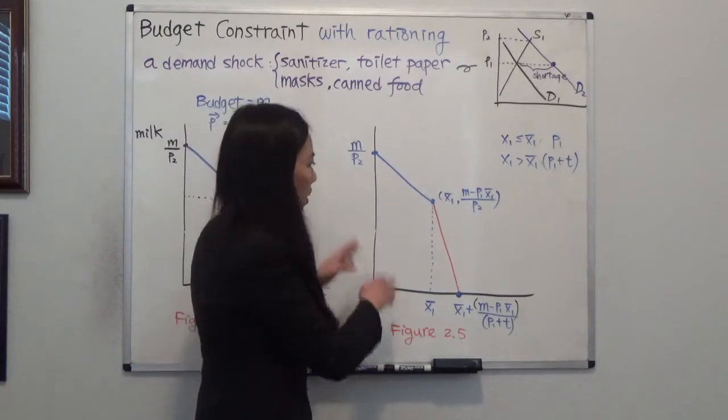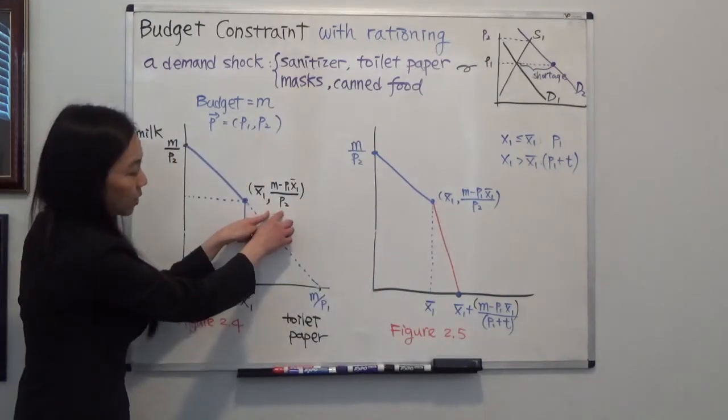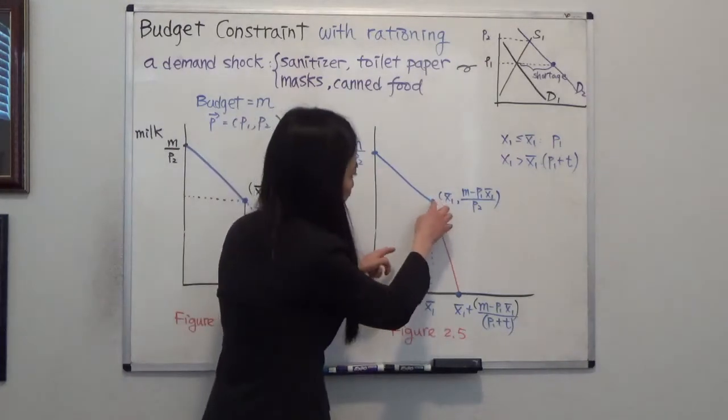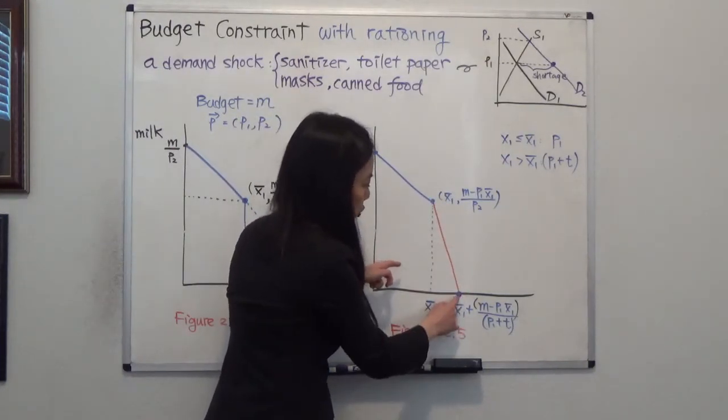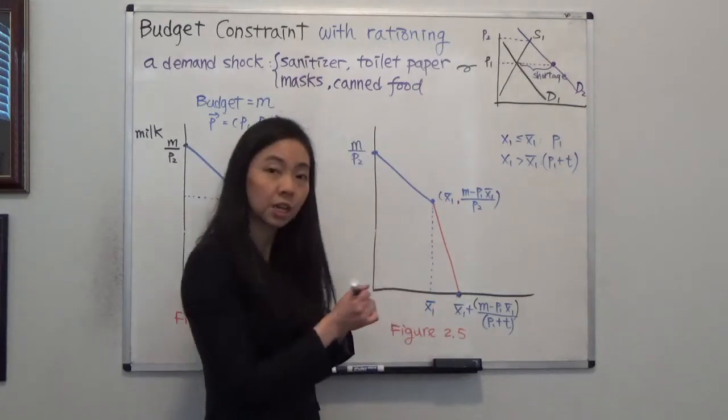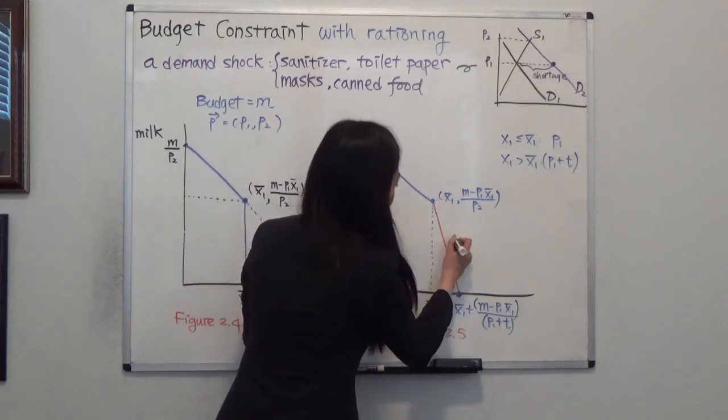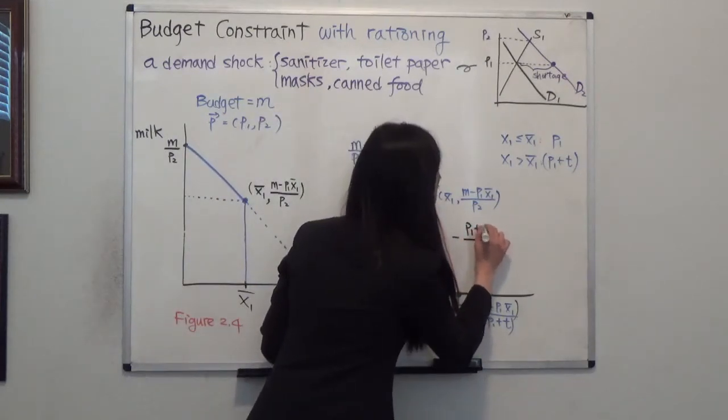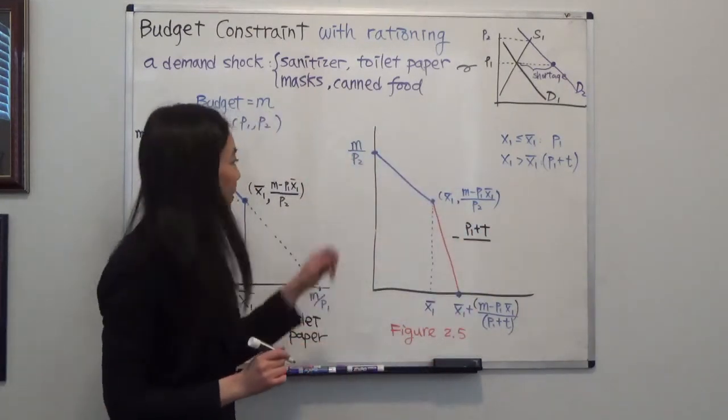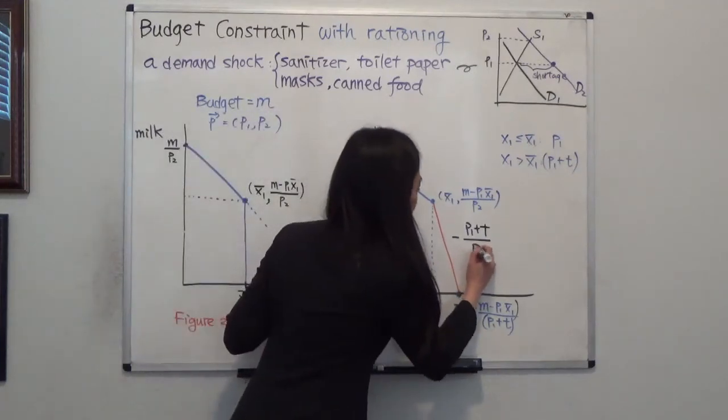So what is my kink point? My kink point is the same as before, but you can see that after the kink point, the slope of my budget line has changed. So what is the new slope of budget line? It will be negative, your new price of toilet paper is P1 plus T, and your price of milk is still the same P2.